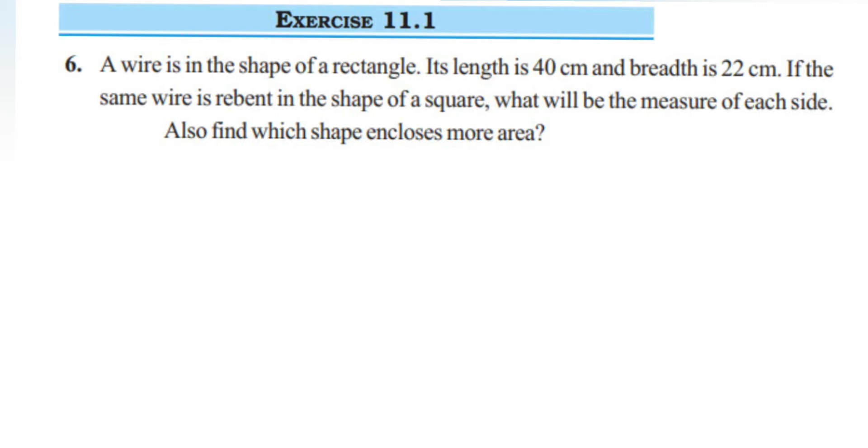Hey everyone, so here's a question from Exercise 11.1, question 6. This is from the perimeter and area chapter. The question is: a wire is in the shape of a rectangle. Its length is 40 centimeters and breadth is 22 centimeters.